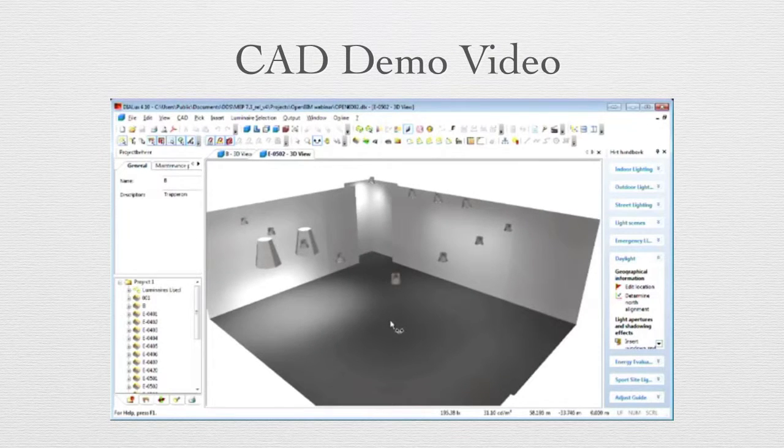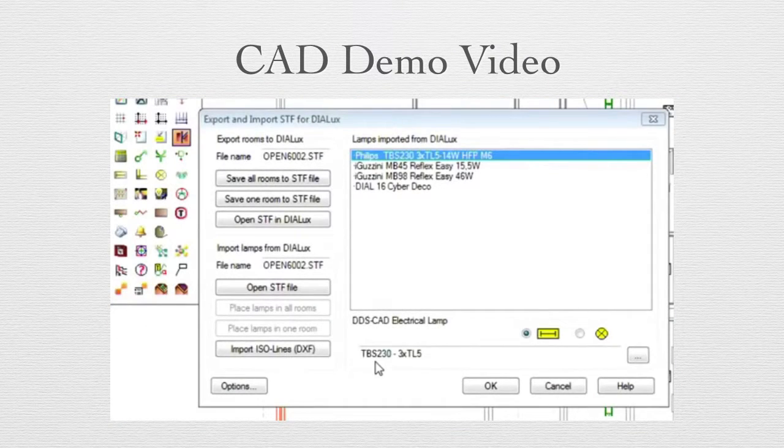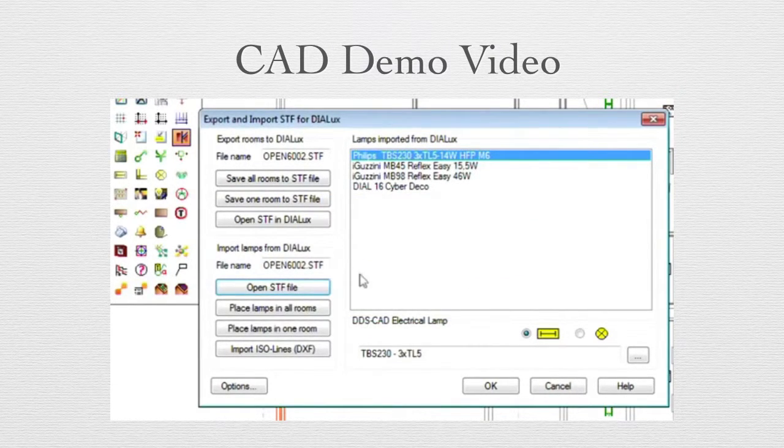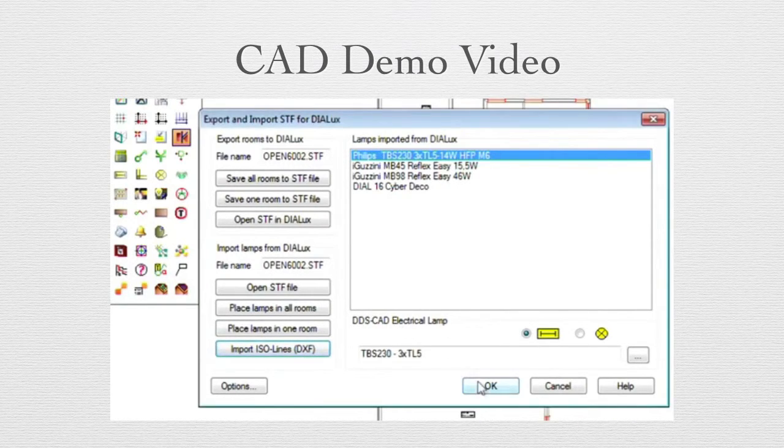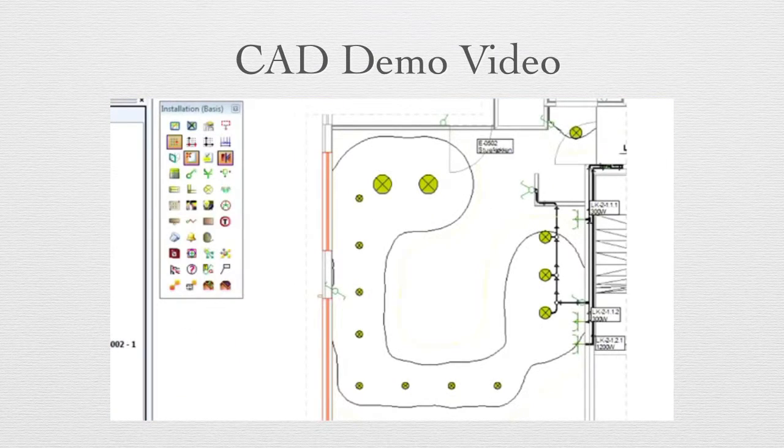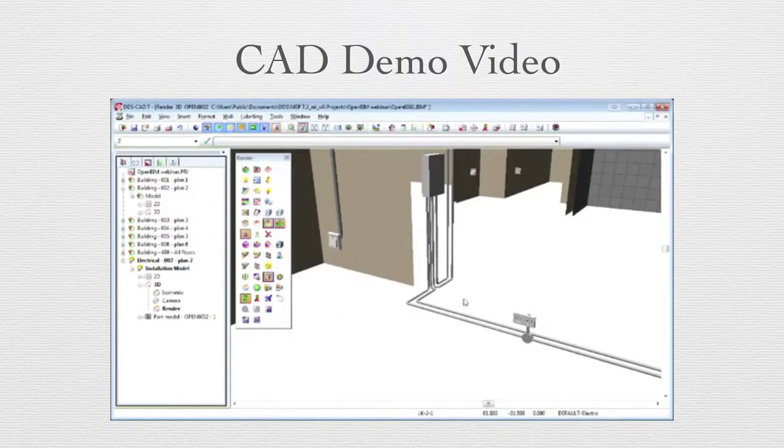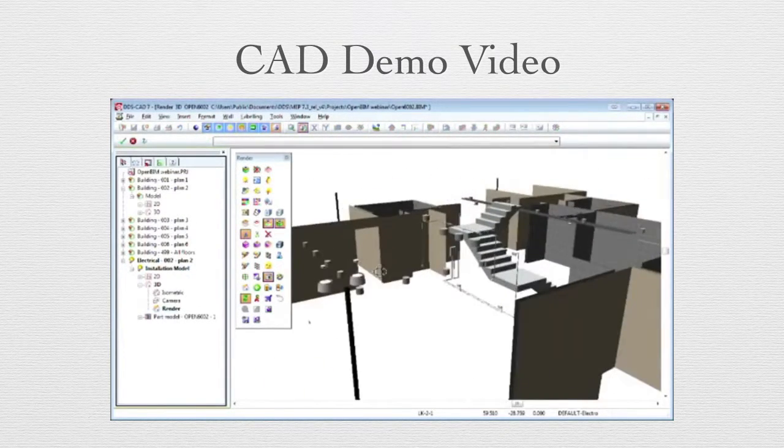For this webinar we have already inserted a few light fixtures and did a light calculation in DILUX. This information can again be directly imported into DDS CAD either for single or for multiple rooms. By opening the STF file again, all light fixtures can be inserted in DDS CAD and will be positioned and rotated automatically in the building model. Furthermore, ISO lines display the LUX information. This is a good example of how information from the ARCHICAD model is reused by DDS CAD, passed on to DILUX to enrich it and is again transferred backwards into the DDS CAD BIM model.